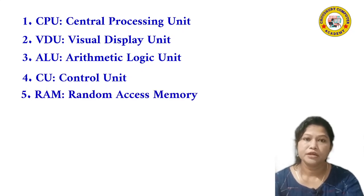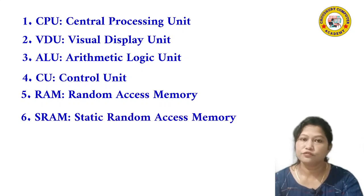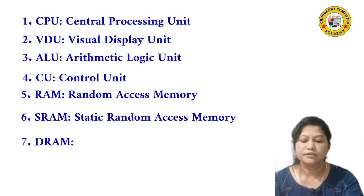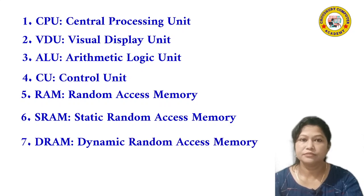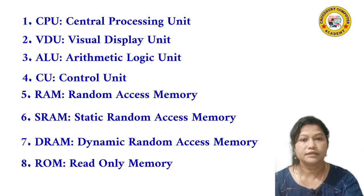Number 5: RAM — full form is Random Access Memory. Number 6: SRAM — full form is Static Random Access Memory. Number 7: DRAM — full form is Dynamic Random Access Memory. Number 8: ROM — full form is Read-Only Memory.